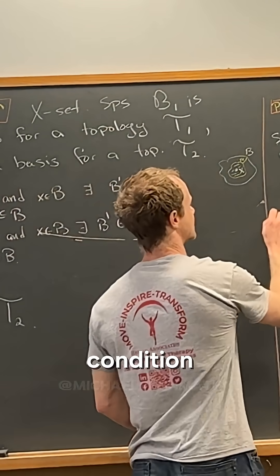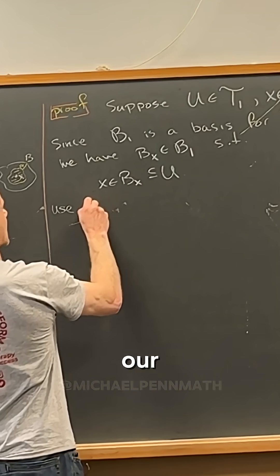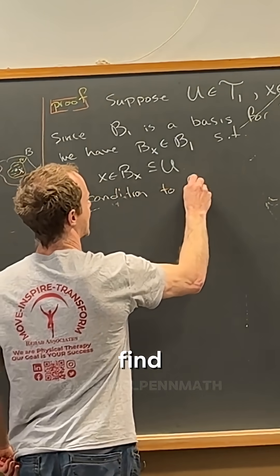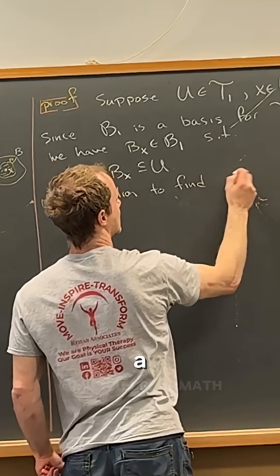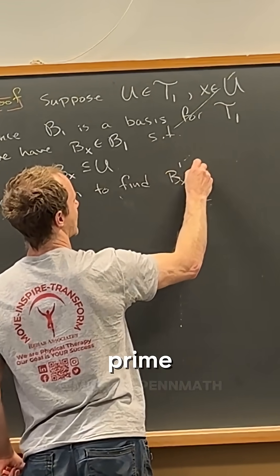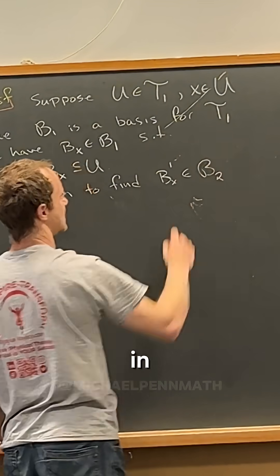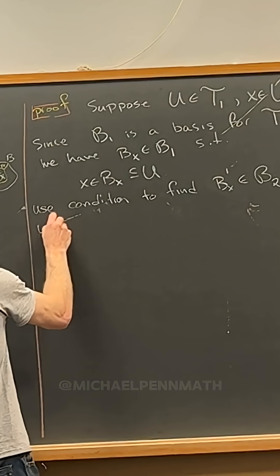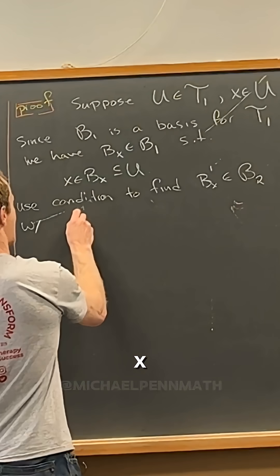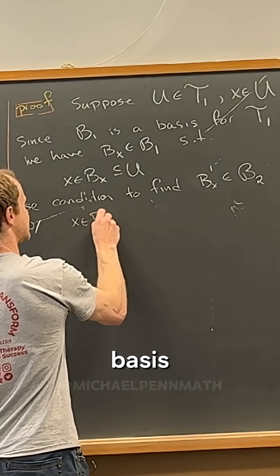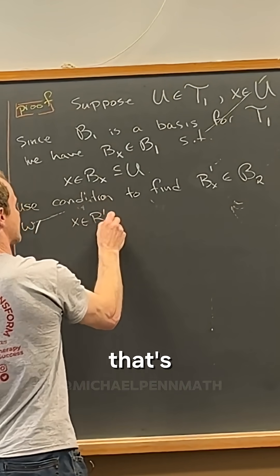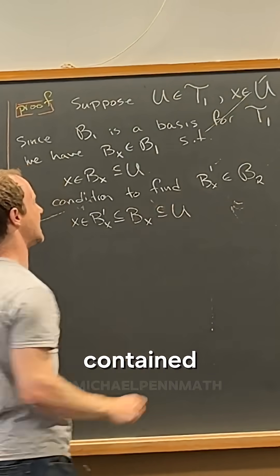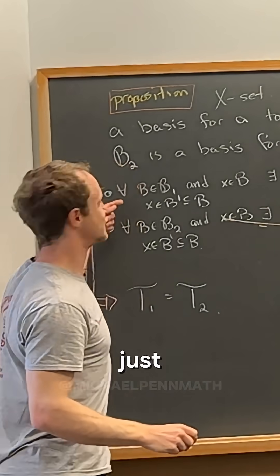And now let's use the condition. So let's use our condition over here to find what I'll call b sub x prime, which is in basis open set b2. With what? With x in basis open set from b2. So that's b prime x, which is contained in bx, which is contained in u. So again, I just use this condition.